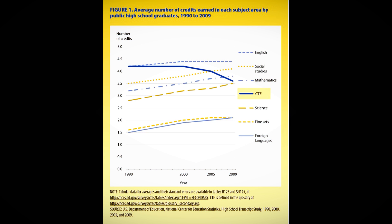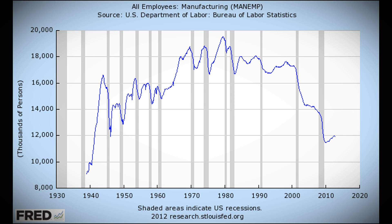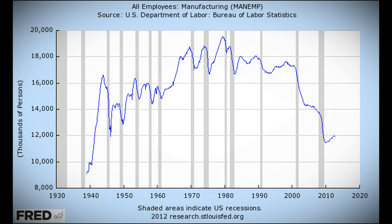First, students are taking fewer CTE classes. As you can see from this graph, since about the year 2000, there's been a general decline in CTE course attendance. Interestingly, here's a graph of manufacturing jobs in the United States, which also shows a sharp decline since the year 2000. Is it possible that the lack of ability to get a job in a CTE-related field can somehow impact the students that actually take the courses?